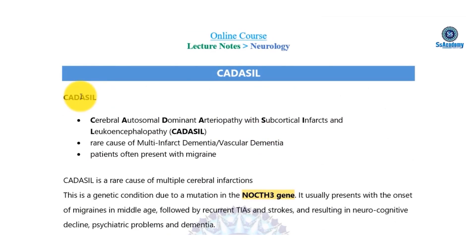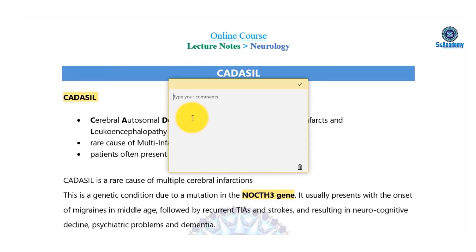Now let's use a mnemonic box to remember CADASIL. C is for Cerebral; A for Autosomal Dominant, meaning family history will be positive — remember NOTCH3, chromosome 19, autosomal dominant inheritance. The next A is for Arteriopathy, meaning the patient will present with migraine as the initial presentation, at the age of 20 to 30 years.